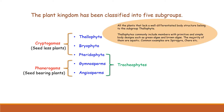The first group is Thallophyta. The plants in this group are normally aquatic. Their body is thaloid — there is no differentiation into roots, stem, or leaves. This group includes green algae and brown algae. An example is Spirogyra. So thallophytes are generally aquatic — that is an important point.